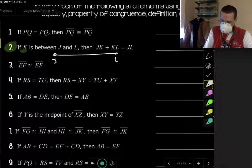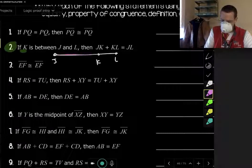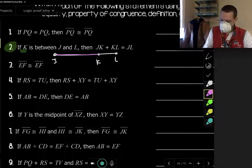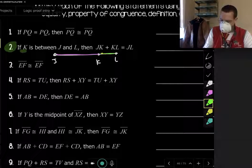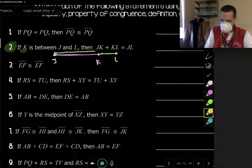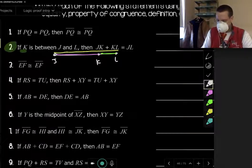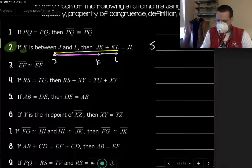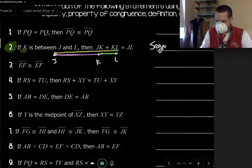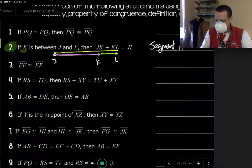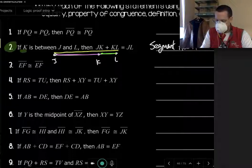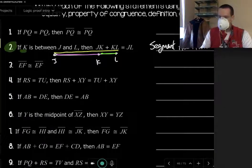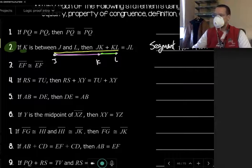So here's J, here's L, K is somewhere between. Then we can take JK, this measurement, plus KL, and it's going to be equal to the whole thing. Well, that to me looks like the segment addition. That's segment addition. We are adding measures, so that's the segment addition postulate.